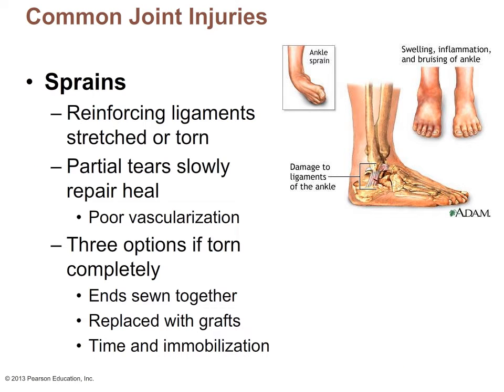To close out this lecture, we'll talk about joint diseases and disorders affecting many types of synovial joints. The first are sprains — injuries where the reinforcing ligaments of a synovial joint are either stretched or, at worst, torn. This is problematic because ligaments are composed of dense regular connective tissue, which is poorly vascularized and tends to heal slowly or not at all. In cases of completely torn ligaments, options include surgically sewing the damaged ends together, replacing the ligament with grafts, or immobilizing the joint — though the last option is least desirable given poor vascularization.